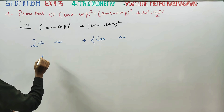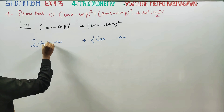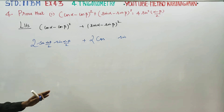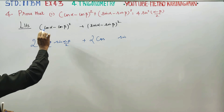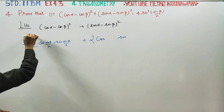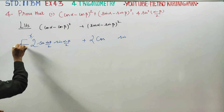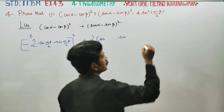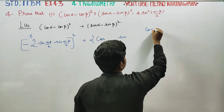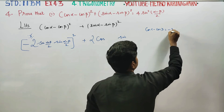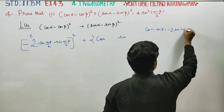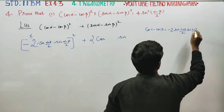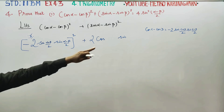Now substituting alpha and beta: using alpha plus beta by 2 and alpha minus beta by 2. The cos minus cos formula gives us: cos c minus cos d is equal to minus 2 times sin of c plus d by 2 times sin of c minus d by 2. We apply this formula here.